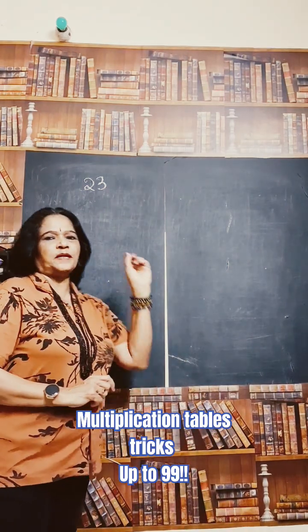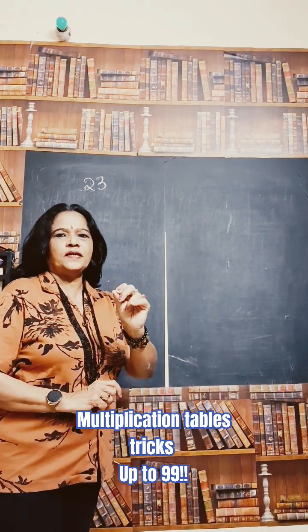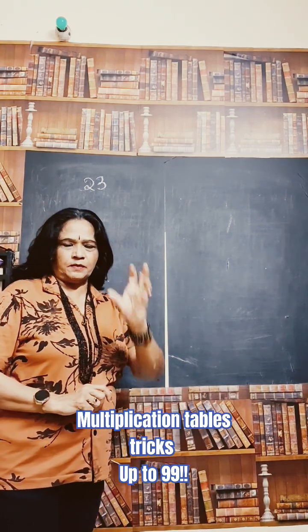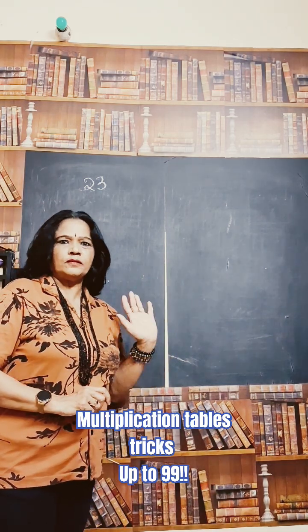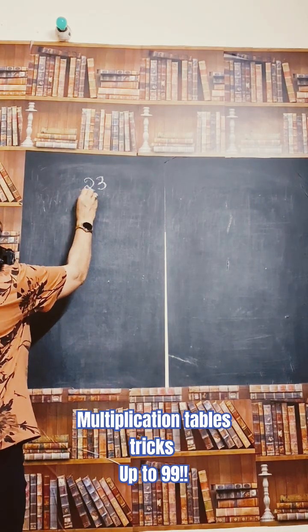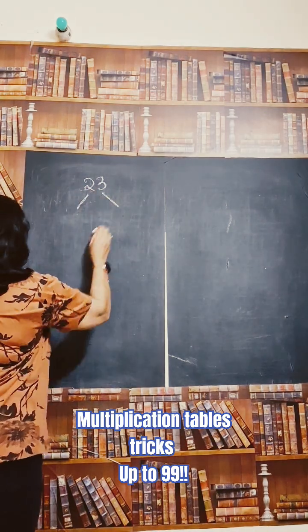Let us write the multiplication tables of 23. First what we have to do, write the tables of 2, then the tables of 3. First we will write the tables of 2 here, then 3 here.